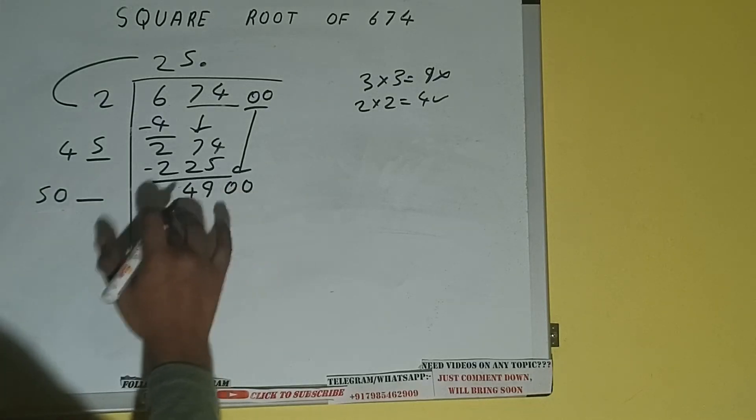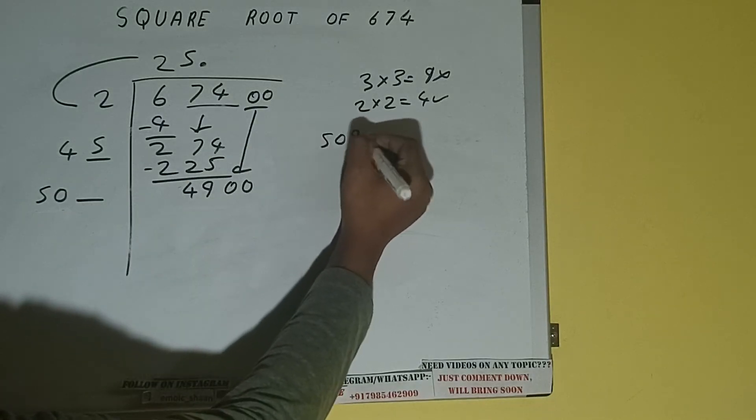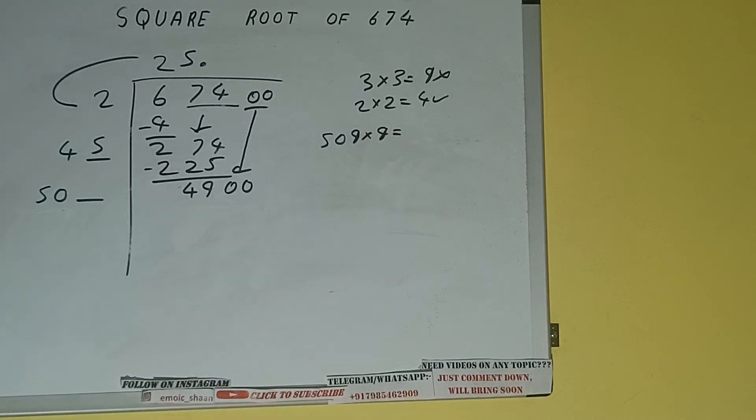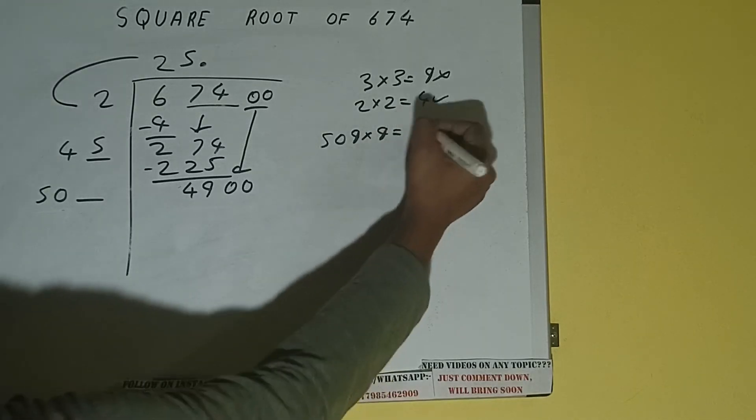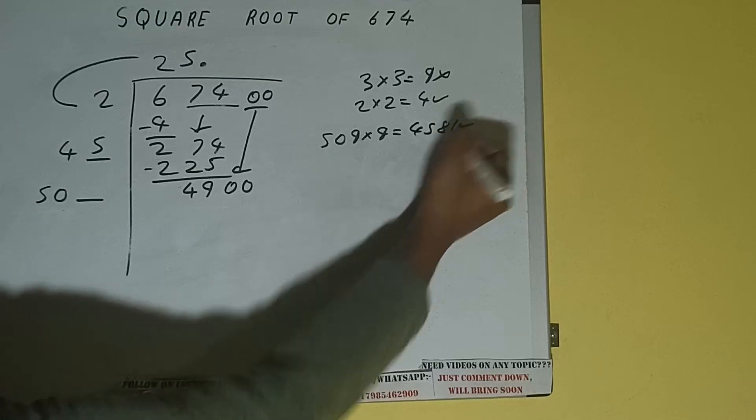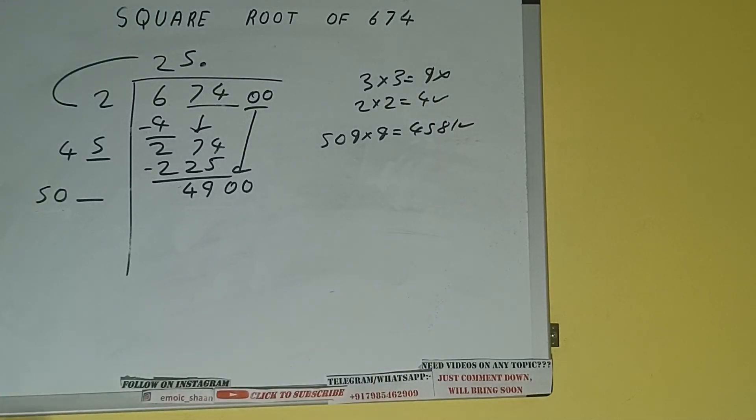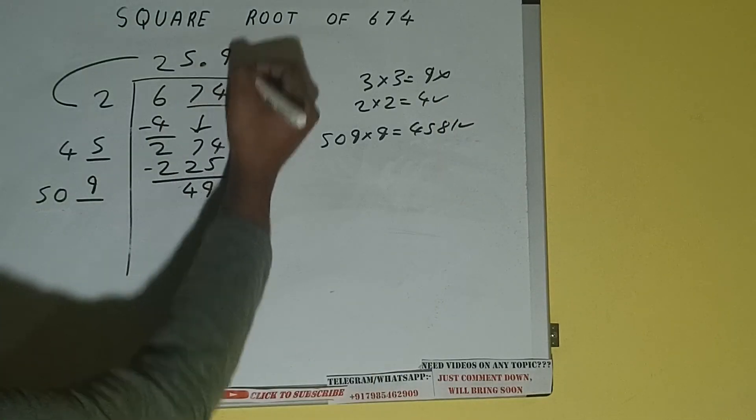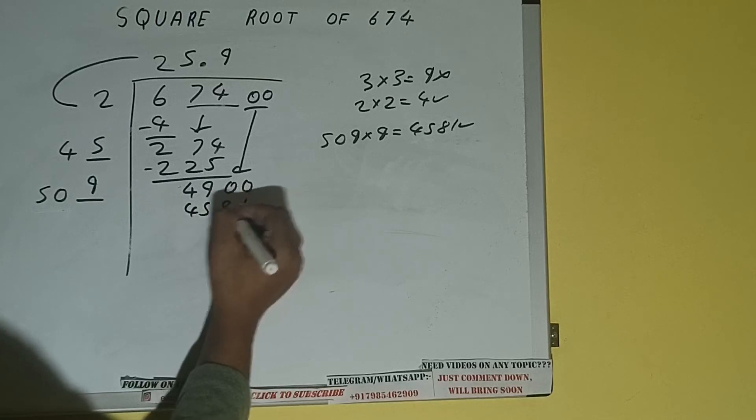Now we can compare this: 50 and 490, so 59 times 9 is 450, so we can try 9 times. So 509 into 9 we can try, and we'll be having 4581, which is good to take. So 9 here and 9 here, 4581 subtract.